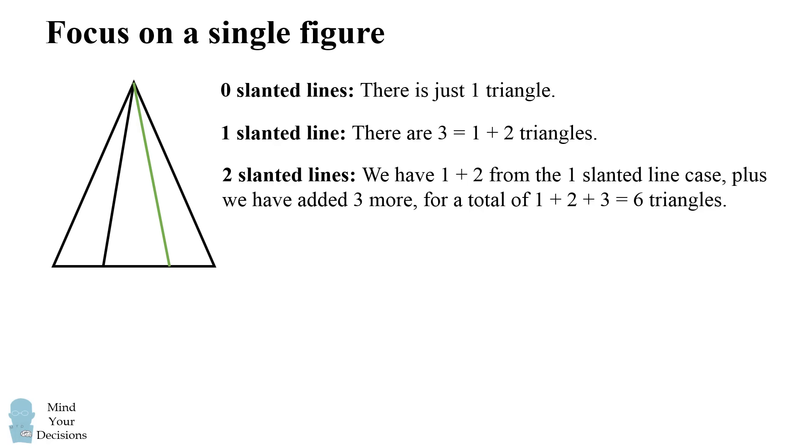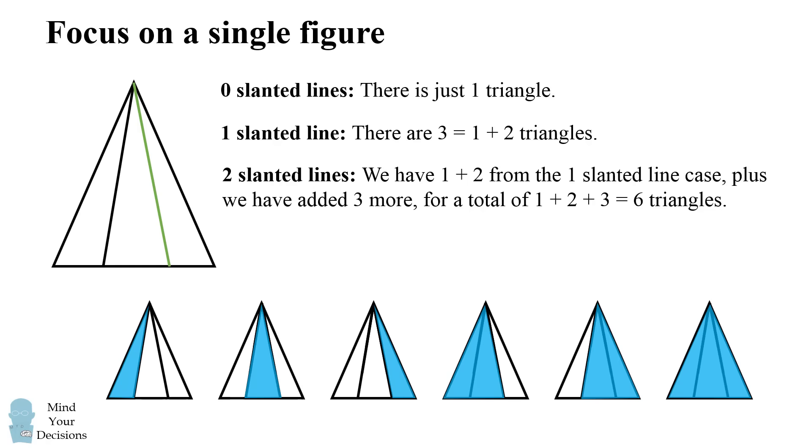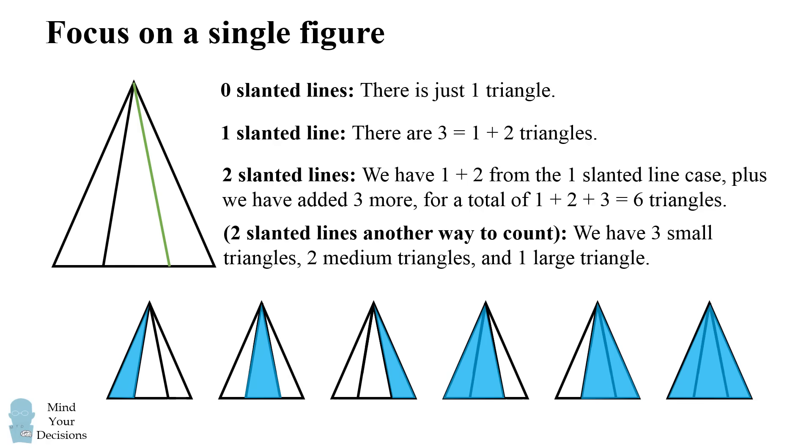Now there's another way that you could count this. If you list all of these triangles, you'll see that we have three small triangles, two medium triangles, and one large triangle. This also makes for a total of six.